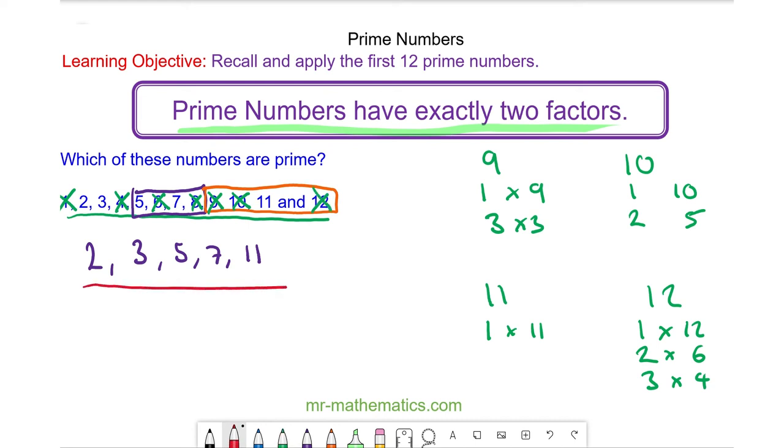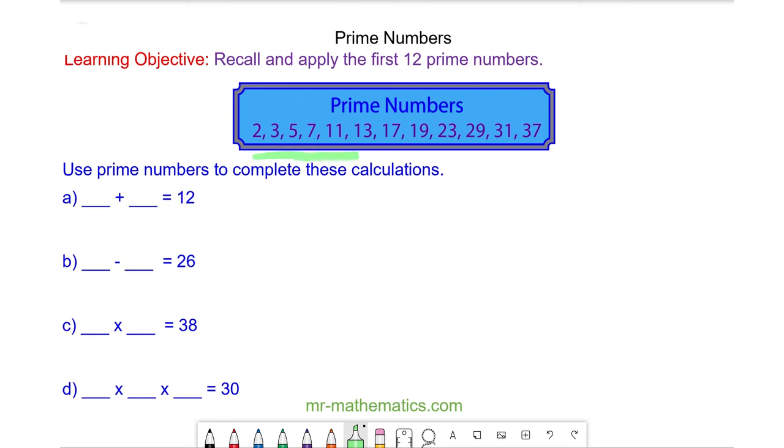So here we have the first five prime numbers. Let's try some more questions. Here we have the first twelve prime numbers.